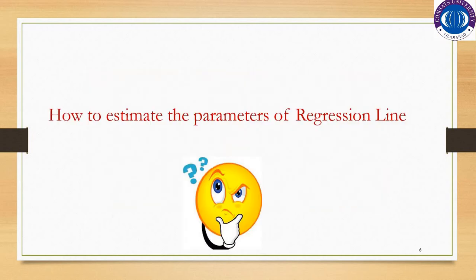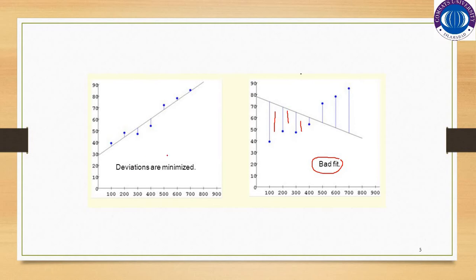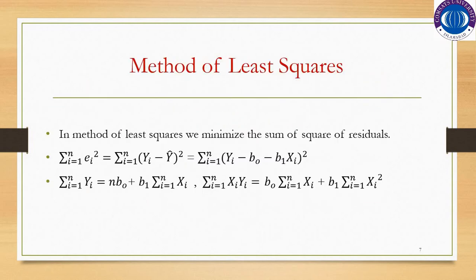So how do we estimate the parameters of the regression line? The question is what strategy or method we should adopt so that we could minimize this distance and get a better fit. For this purpose we use the method of least squares. The method of least squares is a method used to find out the estimates of the unknown parameters beta 0 and beta 1 when you are regressing y on x, so that you get the best fit because it gives you estimates of the parameters which have the minimum variance.